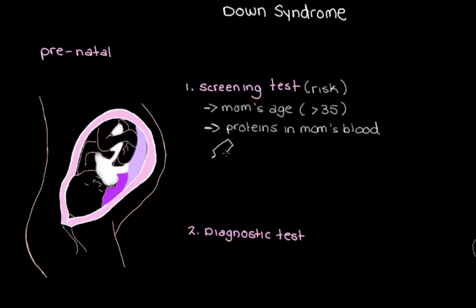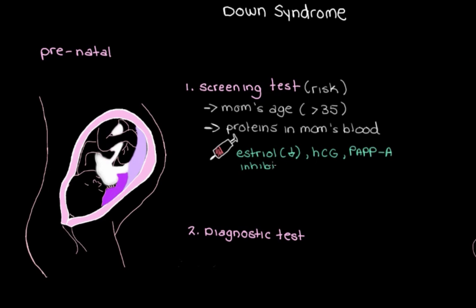For example, we can look at the levels of a protein called estriol, a hormone produced by the placenta. When mom is carrying a fetus with Down syndrome, estriol levels are actually lower than in a mom who isn't. We also look at other markers like HCG, PAPP-A (pregnancy-associated plasma protein A), inhibin, and AFP (alpha fetoprotein).